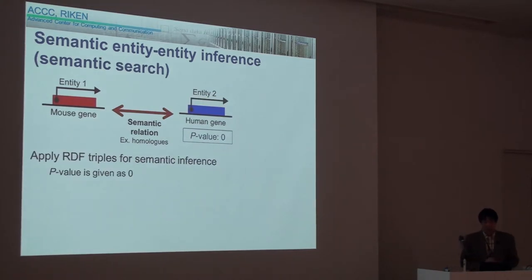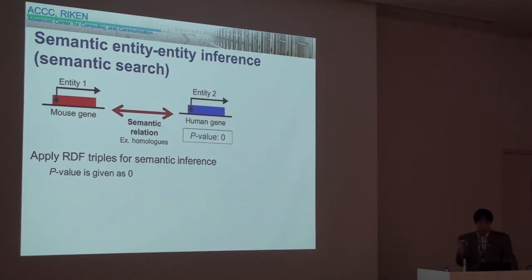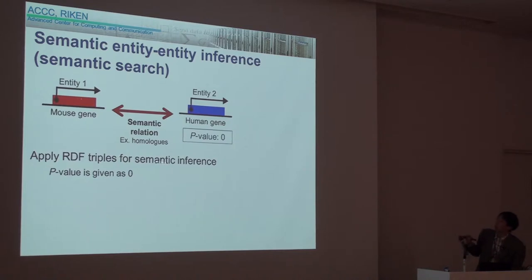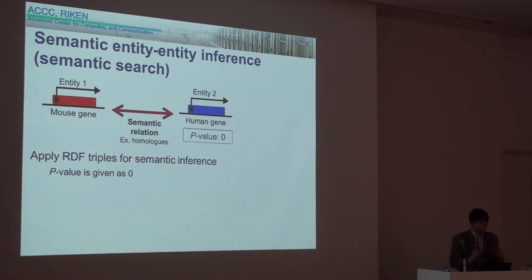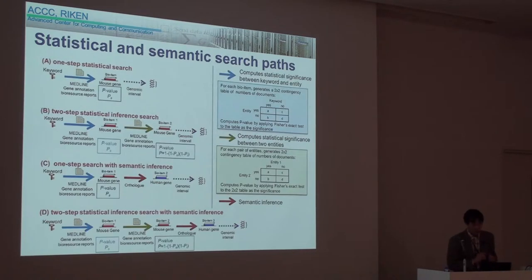The third search is semantic entity-entity inference, which applies RDF triples to infer other entities. In this case, we have a semantic relation between mouse gene and human gene — the ortholog relationship. In this search, the p-value is given as zero because this is not a statistical inference.